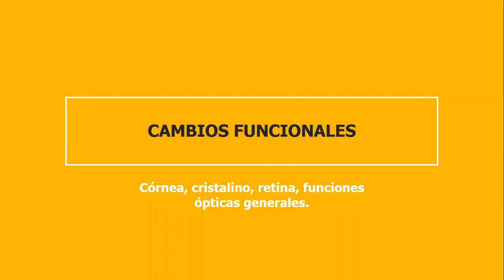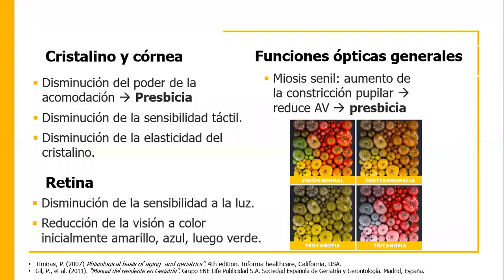Todos estos que vimos son cambios estructurales del ojo per se, que nos van a traer ahora cambios funcionales. En el cristalino y la córnea ya hemos estado hablando sobre la pérdida del poder de acomodación por el fibrosamiento del cristalino, que nos va a dar la presbicia. Va a haber disminución de la sensibilidad táctil y de la elasticidad del cristalino.